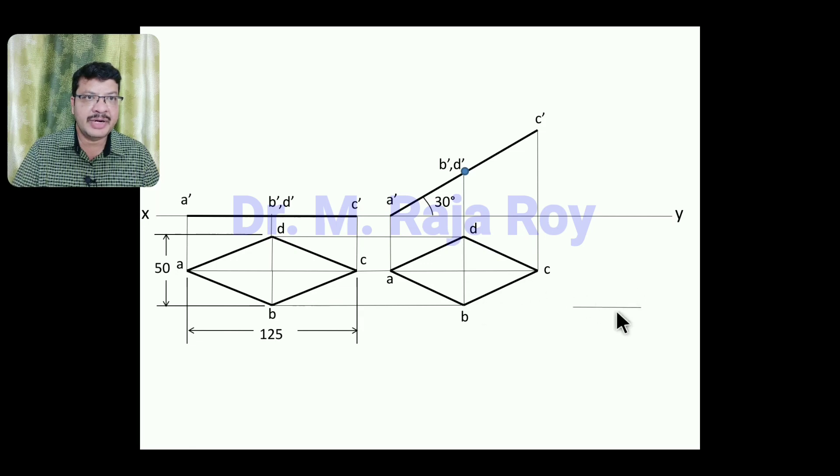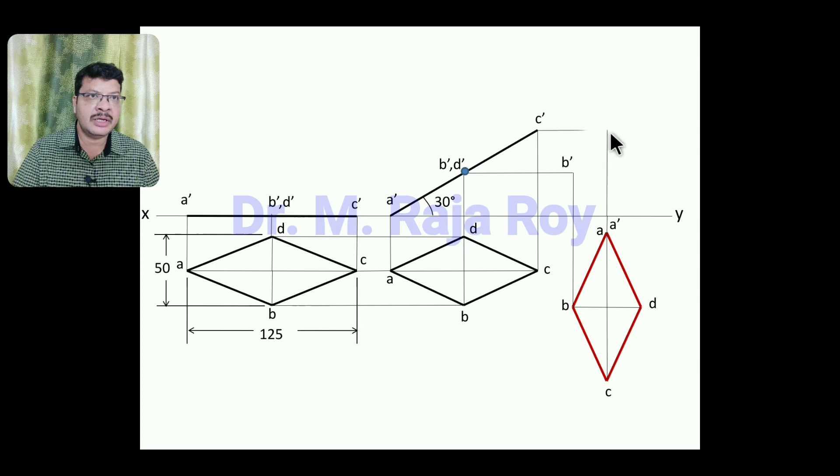This particular BD length I will draw here. This is BD, at the midpoint you draw a perpendicular representing this AC. This is AC, this is A and C. Now draw the projectors and locus lines to get the final front view here. This is the projector of A, locus of A', this is A', here I will get B', then here I will get C', here I will get D', A', B', C', D' is the final front view.